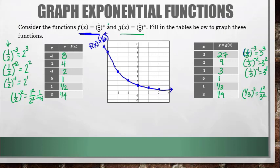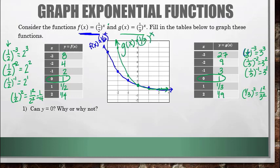When we go to graph this, we get a point way up there at negative 3, 27. Negative 2 is at 9. Negative 1 is at 3. We're still sharing that same point 0, 1 in common — notice on the graphs on the other side, they both had 0, 1 on those graphs as well. Then 1, 1/3, and 2, 1/9. Can y equal 0 in this case? No, y cannot equal 0, because you can never raise a number to a power and get 0.